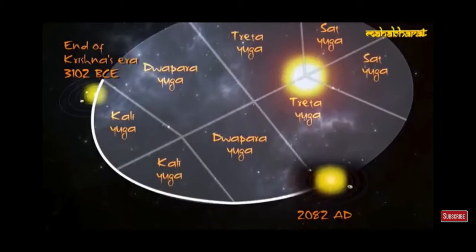Which Yuga are we in now? As you can see, the Dwapara Yuga. This is a picture of our sun going around Alcyon. Right now, if you look at the bottom of that picture, it's 2082. We're in the Dwapara Yuga on this side, and in 2082, in about 60 years, we'll be going into Treta Yuga. We're going this way back up to Sat Yuga.